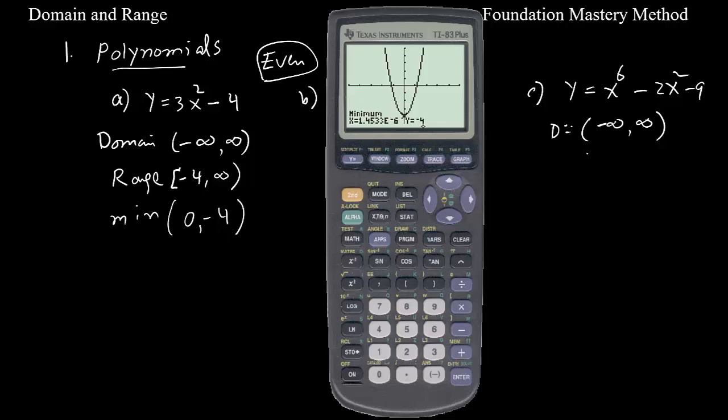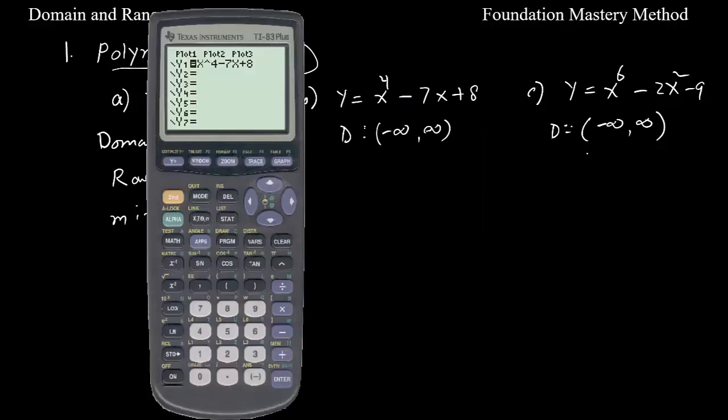We are just saying that the range is negative 4 included to infinity, and the minimum value of that function is set to 0 and negative 4. We'll take the second example. We have our second function x to the 4 minus 7x plus 8. Remember the exponent is even, leading exponent is even. So this is even order polynomial. As we expected, domain will be all real numbers but range will be from minimum to positive infinity.